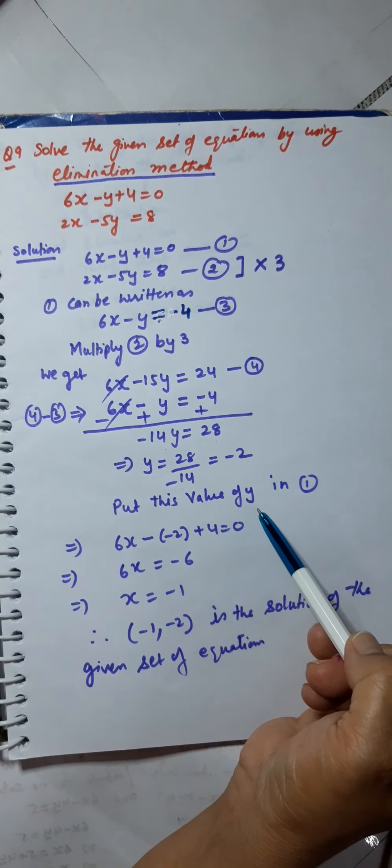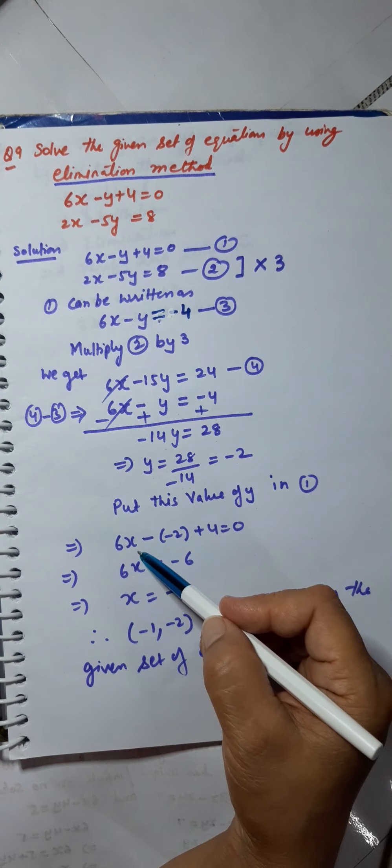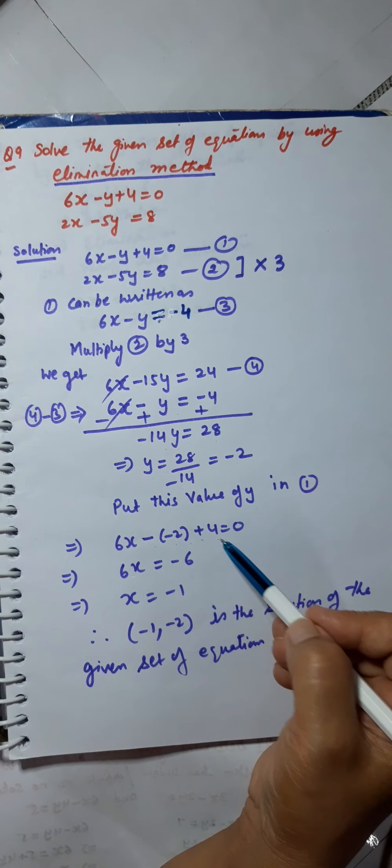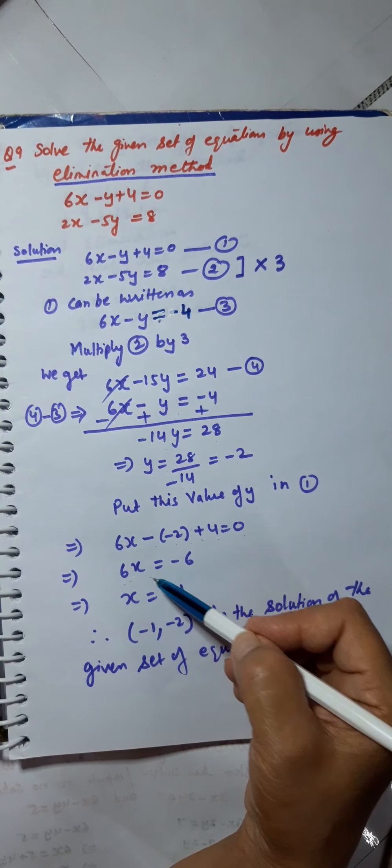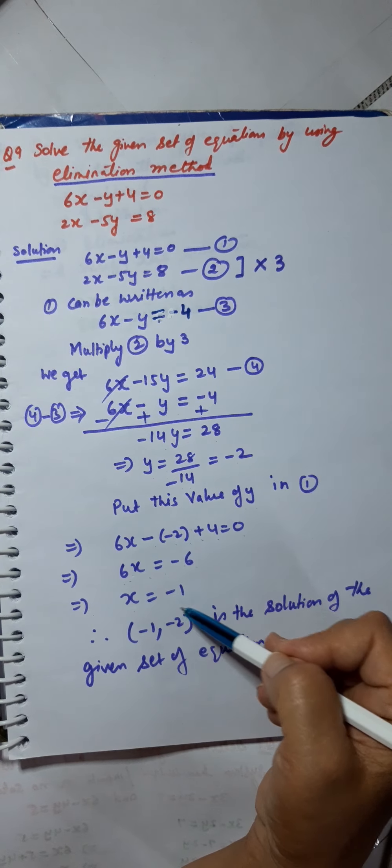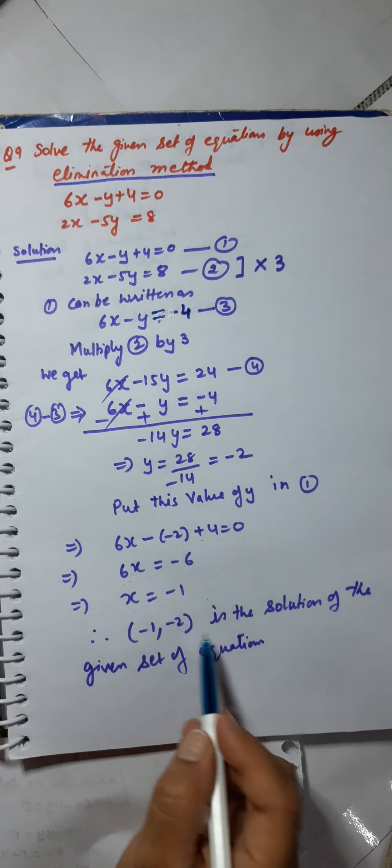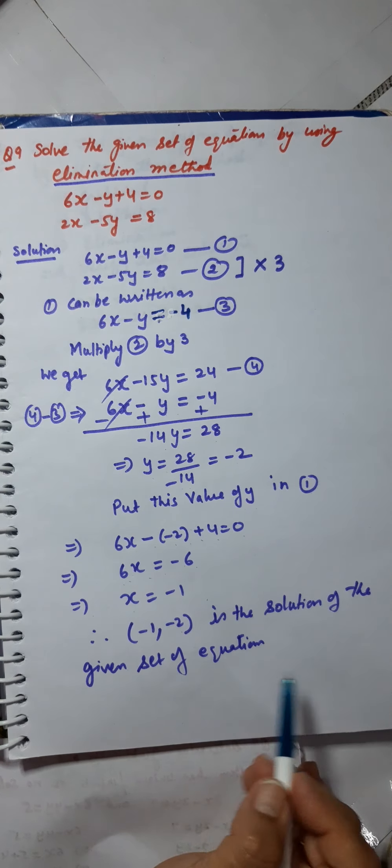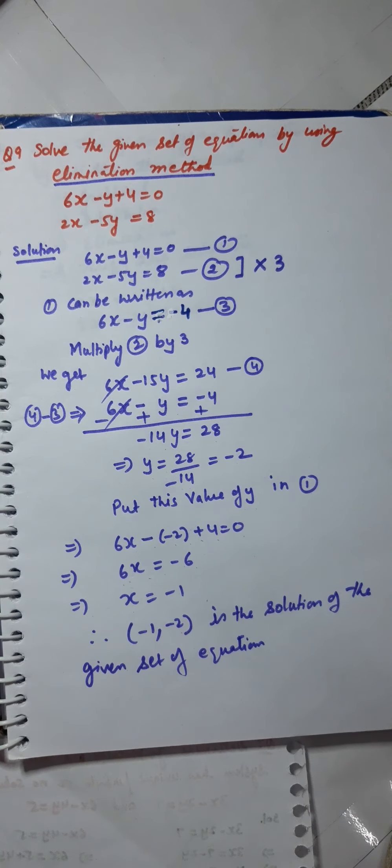Now, put this value of y in number 1. This implies 6x minus minus 2 plus 4 equals 0, which implies 6x equals minus 6, implies x equals minus 1. Therefore, minus 1 comma minus 2 is the solution of the given set of equations. Thank you.